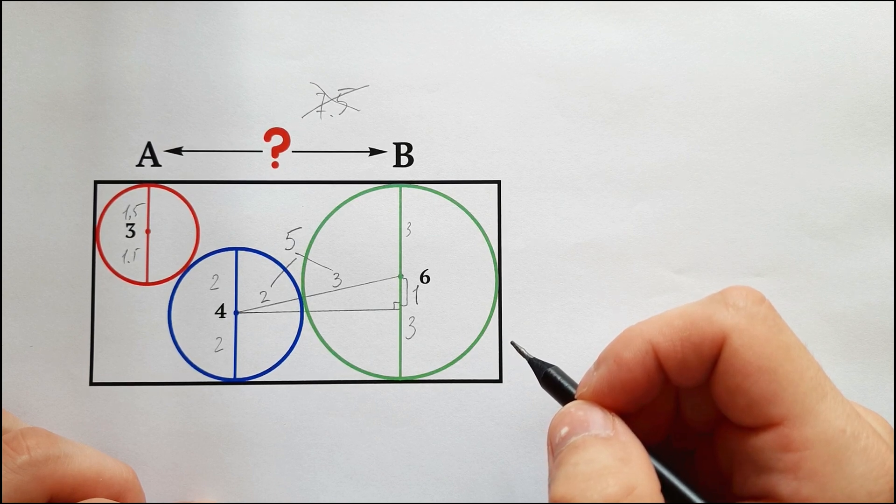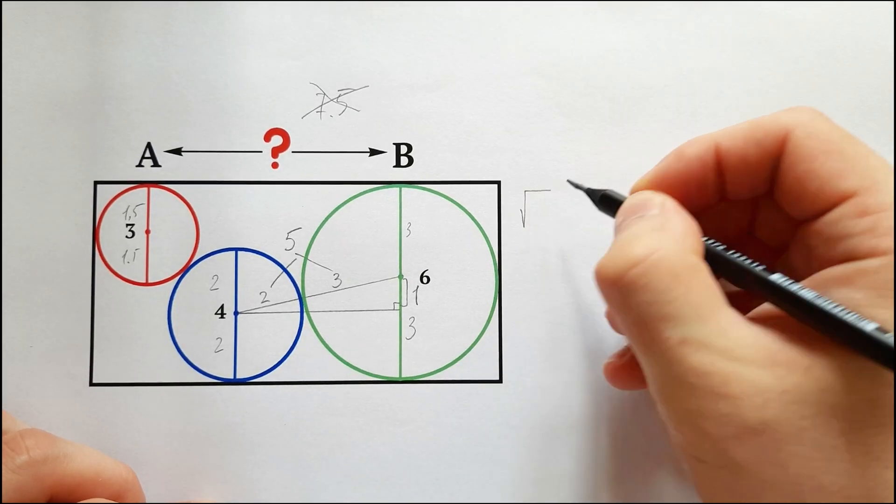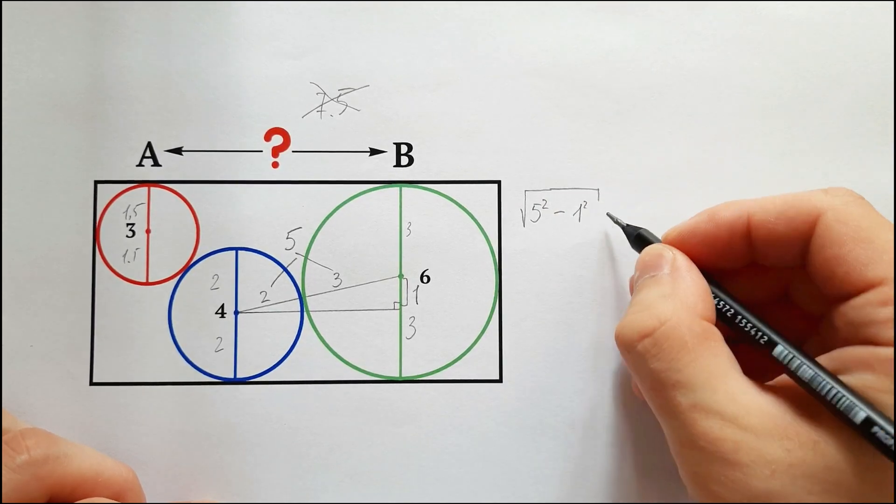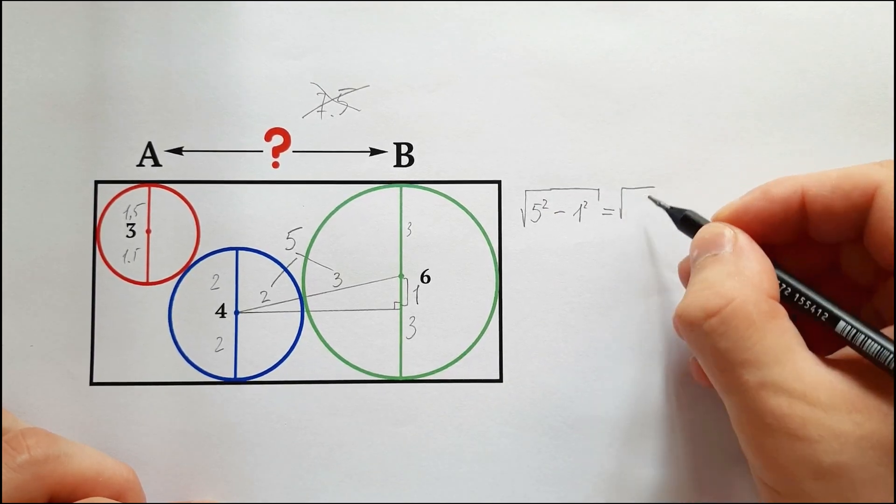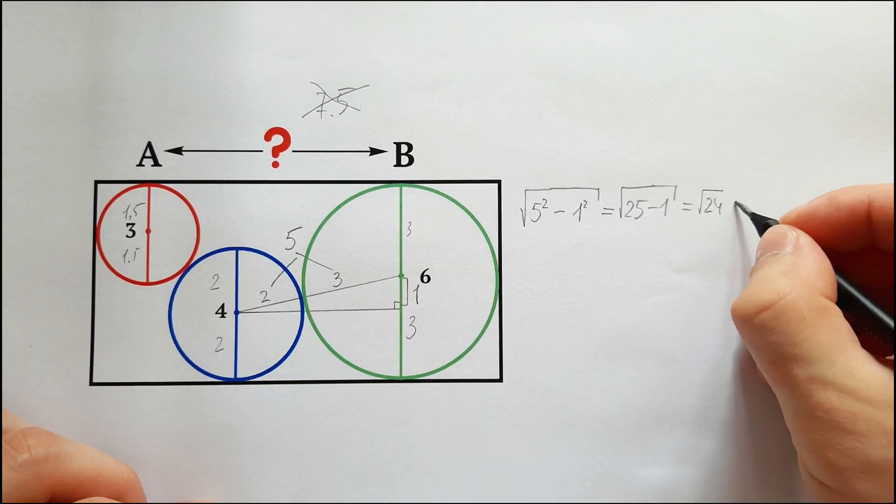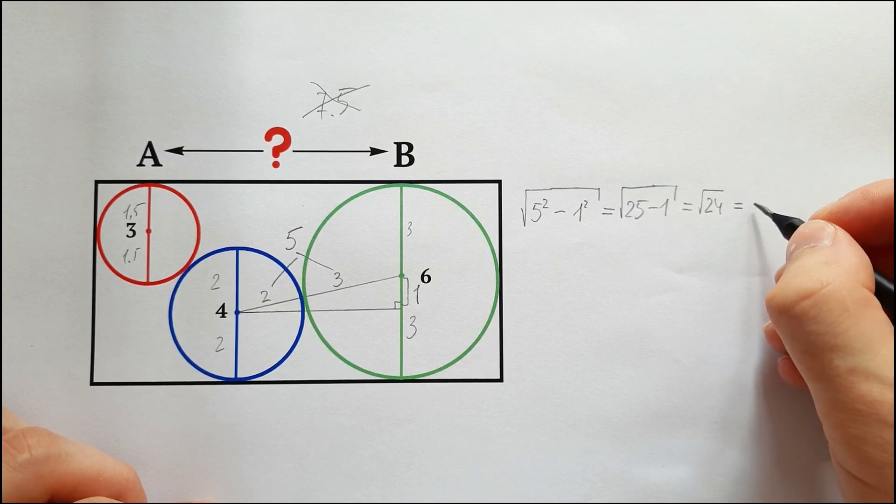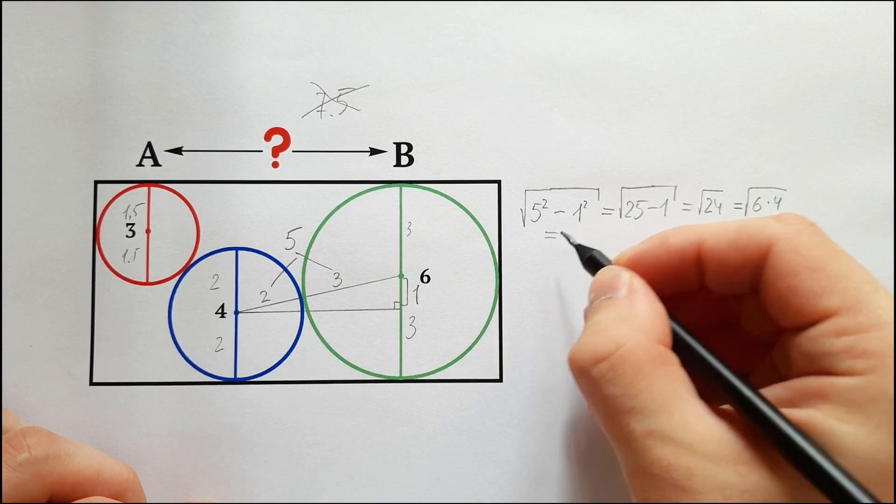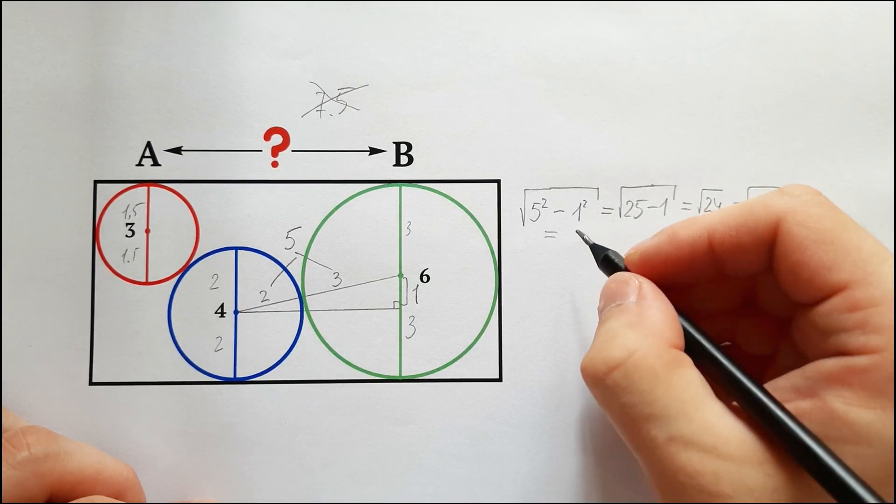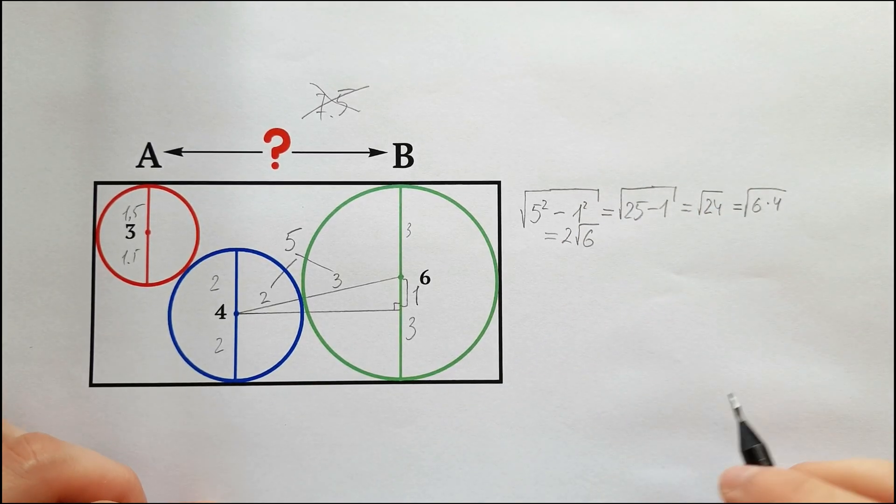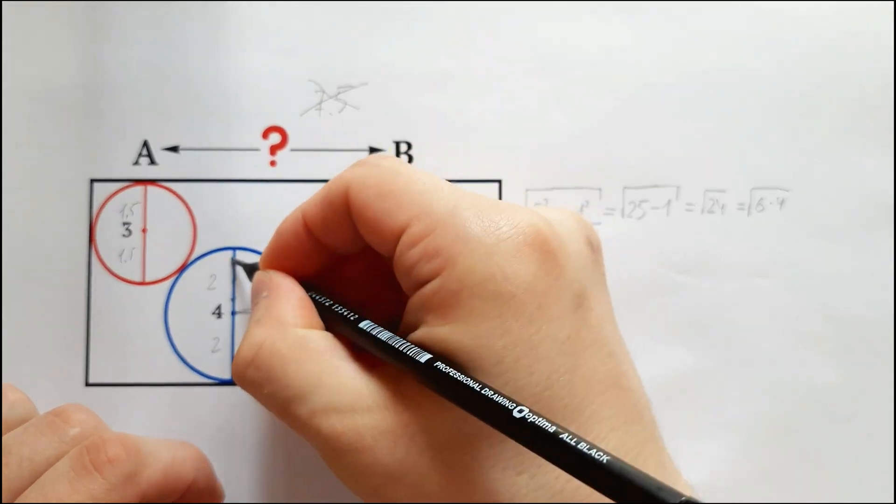As you can see, now we can apply the Pythagorean theorem to find the second side of our right triangle. 5 squared minus 1 squared, and we take the root from all of this. So we get 25 minus 1, or the square root of 24. 24 we simplify as 6 multiplied by 4, and this 4 we can take out from under the root to get the final 2√6. We've just found a part of the distance AB.